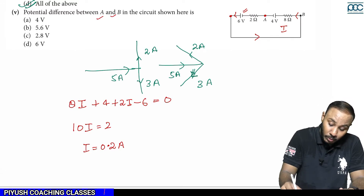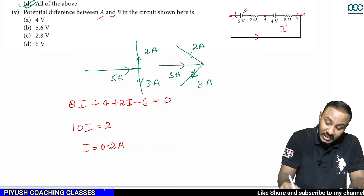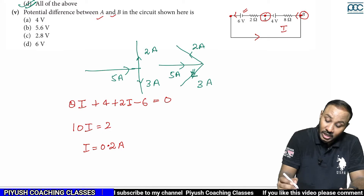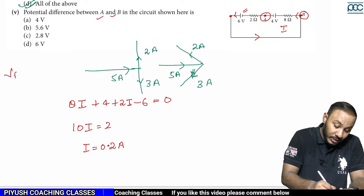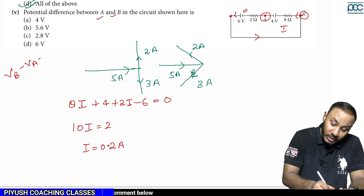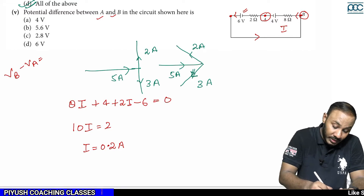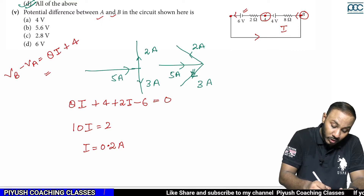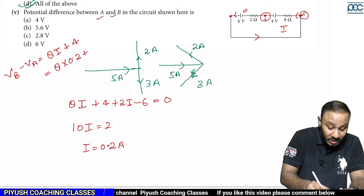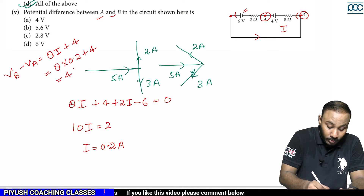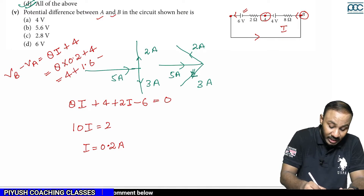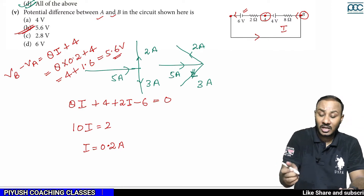Now, we are asked for the potential difference between A and B. Current flows from one to the other, so one has higher potential and the other lower. Starting from B to A: the potential difference equals 8I plus 4, which is 8 × 0.2 plus 4, that is 1.6 plus 4, giving 5.6 volts.